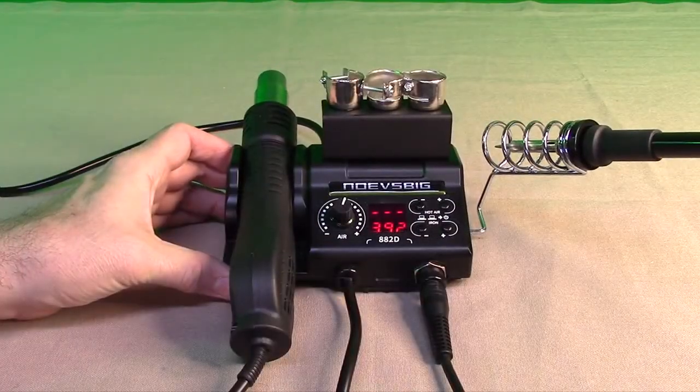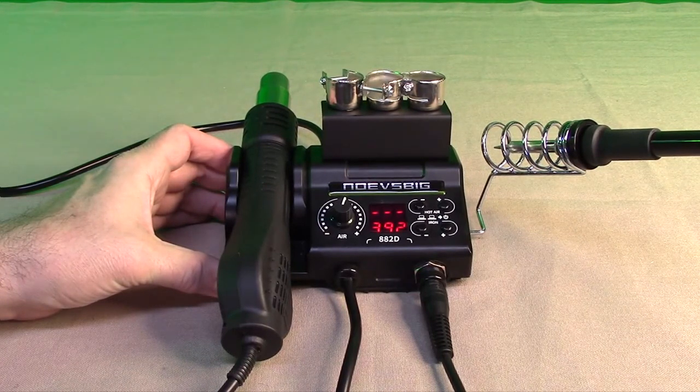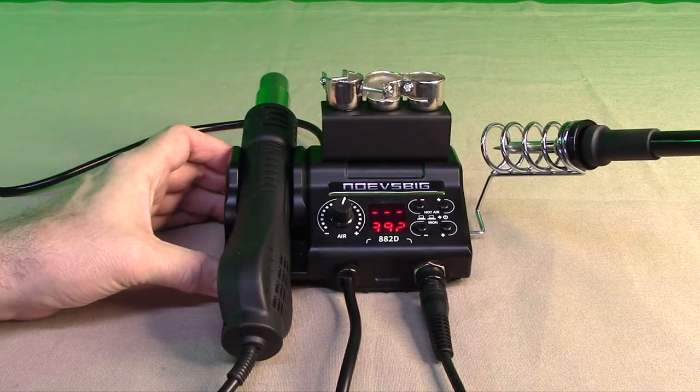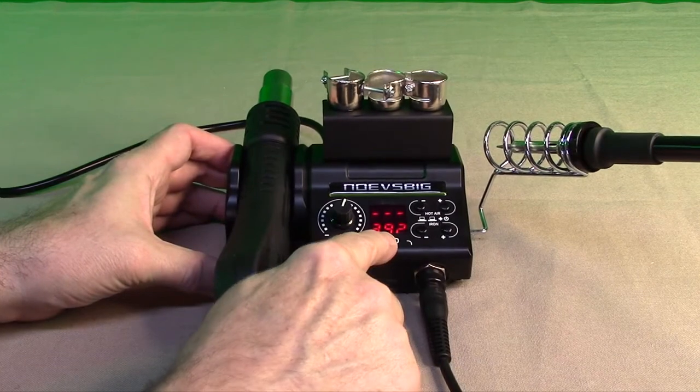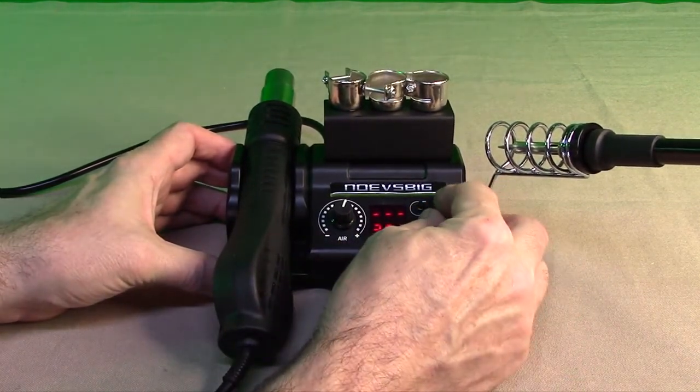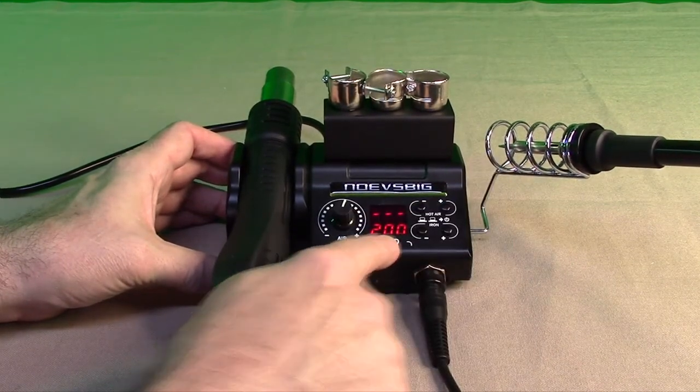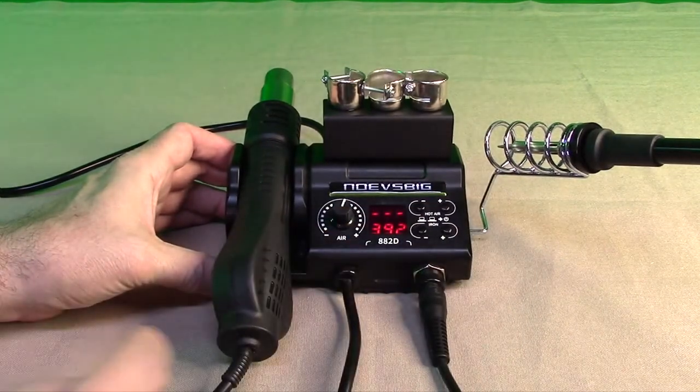One of the nice things about this is you could change the temperature display based on what you're familiar with, centigrade or Fahrenheit. Right now it's on Fahrenheit. If I want to go to centigrade, you hit the iron minus and the hot air plus together. Now it went to centigrade. You see it dropped down to 200. And we go right back to Fahrenheit, whatever you're more comfortable with.